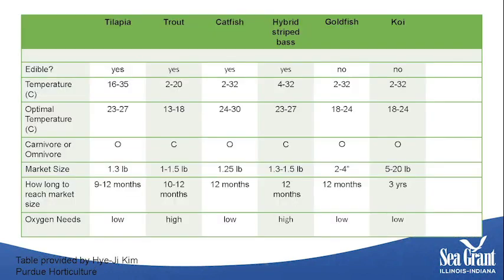Fish species utilized in aquaponics systems include tilapia, trout, channel catfish, hybrid striped bass, and in some areas goldfish and koi. Generally these fish are produced as food fish, while goldfish and koi are sold in the pet trade. All of these fish have different water quality needs. Tilapia are warm water fish requiring around 23 to 27 degrees Celsius; dropping below about 60°F will generally cause a die-off and they need above about 70°F for good growth.